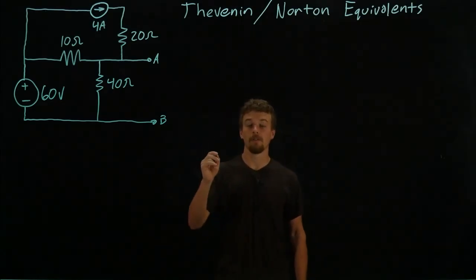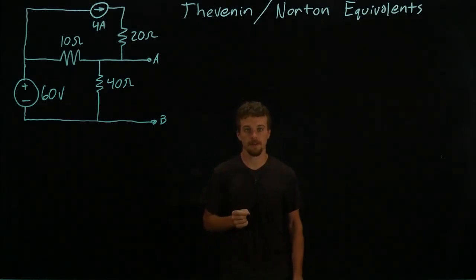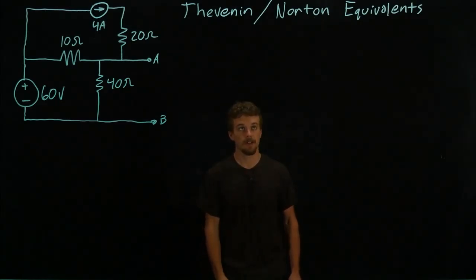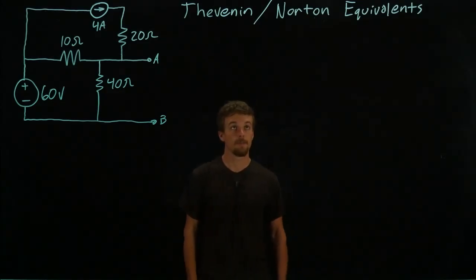A Thevenin equivalent will have a voltage source in series with a resistor and a Norton equivalent will have a current source in parallel with a resistor.